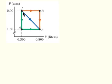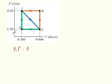For the direct path IF, the area under IF includes a triangular portion plus a rectangular portion at the bottom. We calculate the triangular area as the change in pressure times the change in volume divided by 2, then add the final pressure times the change in volume for the rectangle. So the total area equals |ΔP| × ΔV / 2 plus P_final × ΔV.